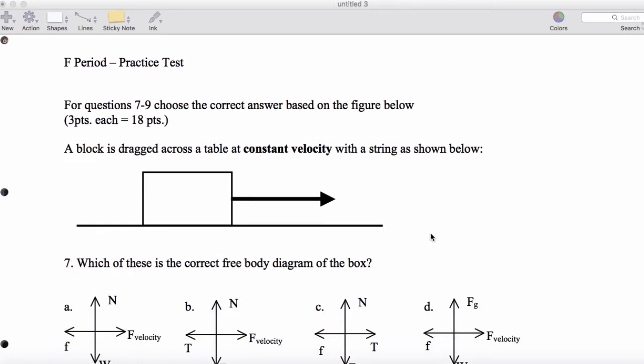Alright, now page two, nice classic question here. We have an object dragged across a table at constant velocity. So let me just begin the free body diagram. I'm going to have a normal force, I'm going to have the weight force, and I have some kind of a tension force dragging it.